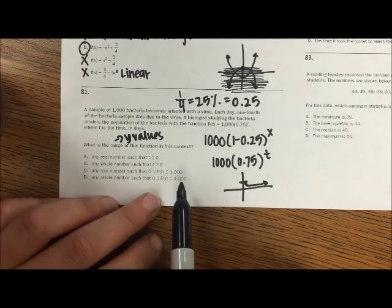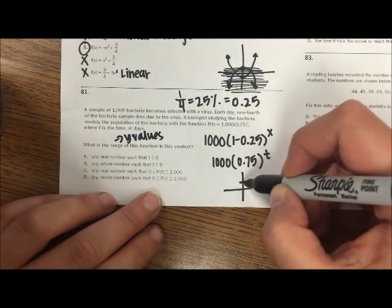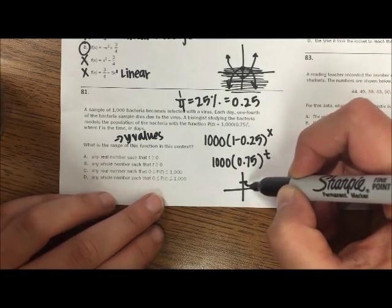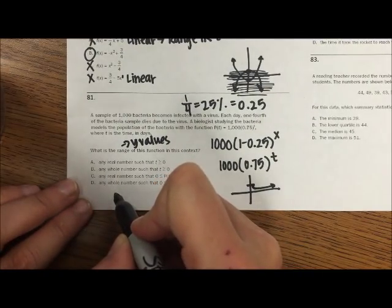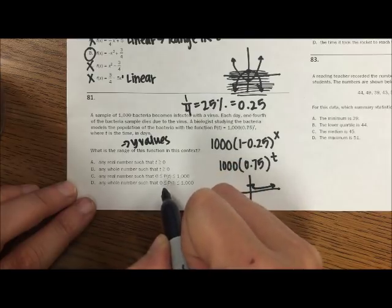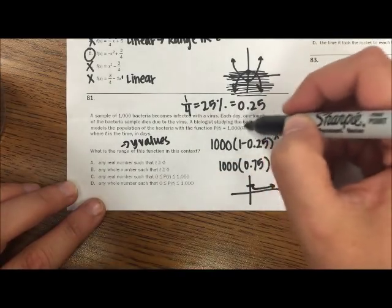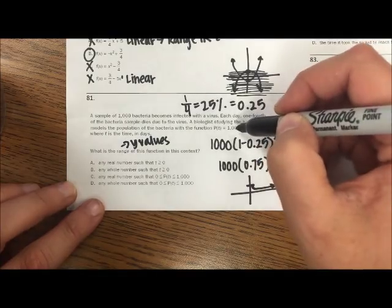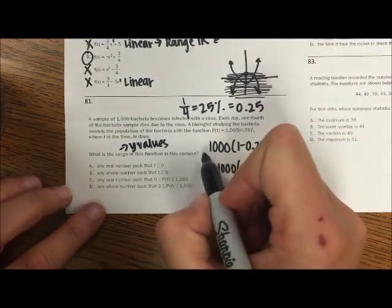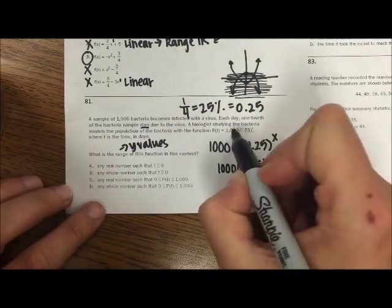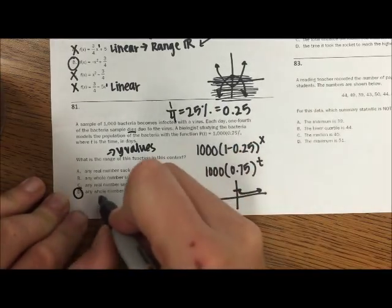So our option would be between zero, range of zero and a thousand, and we're talking whole numbers. Because I cannot have, I can't go less than zero, I can't go negative bacteria, but my maximum is a thousand. I can't go anymore because I'm dying, I'm not going more than a thousand. So D would be your option, between zero and a thousand, and it's a whole number.